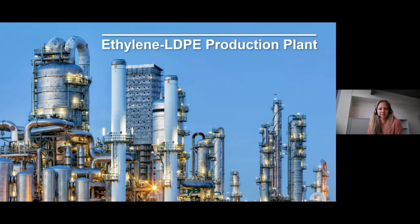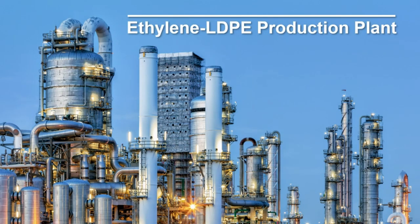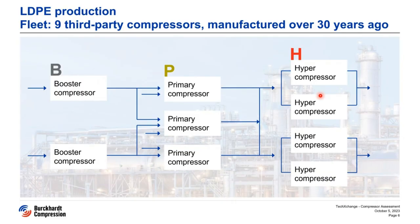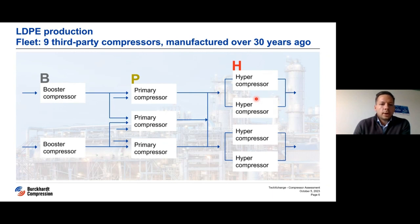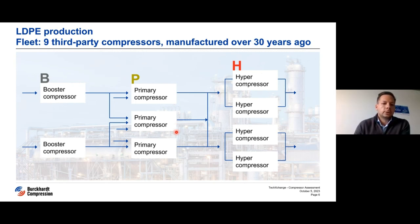Thank you very much, Daniela. Good day, ladies and gentlemen. At the LDPE combined production plant with quite a large capacity, we look into the LDPE part of the plant. Here the conversation is about two production lines which have nine compressors in total, three different types designated as booster, primary, and hyper compressors. All compressors except one primary are running without any redundancy. Except for the primary block, which has two running compressors and one on standby, all other compressors have no standby. This practically means that in case of shutdown of these compressors, it directly impacts the output of the plant.